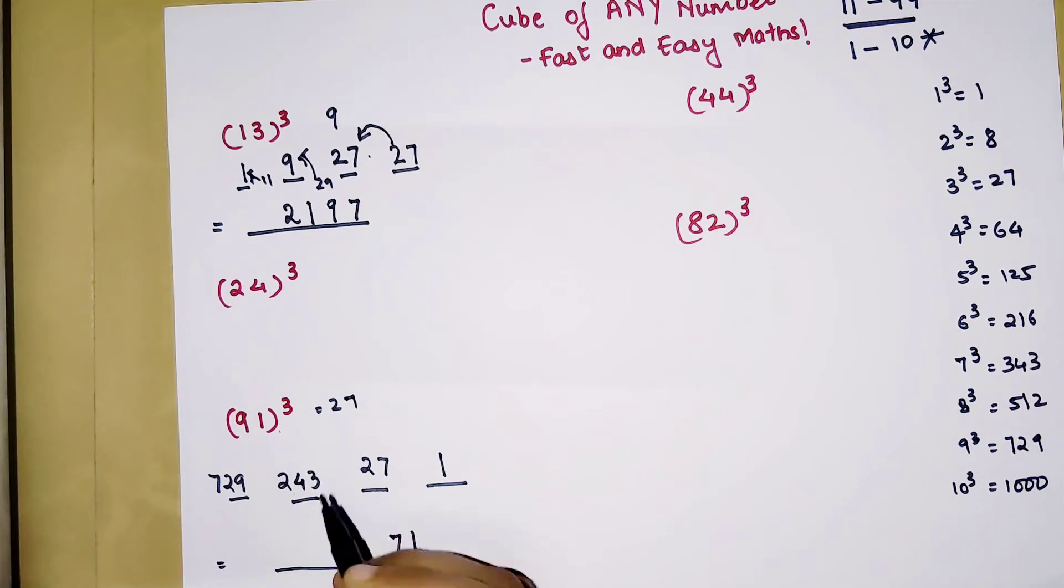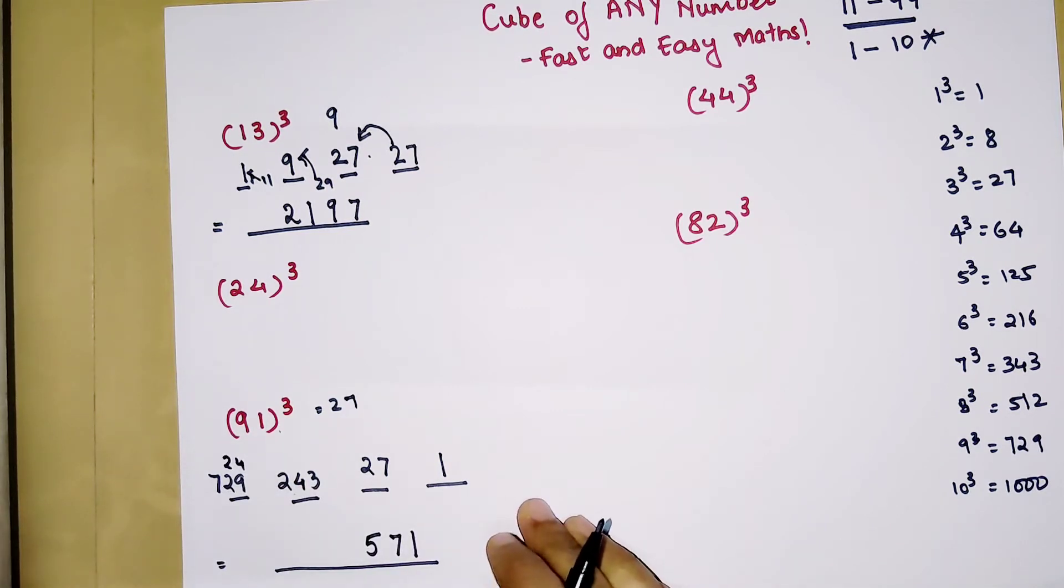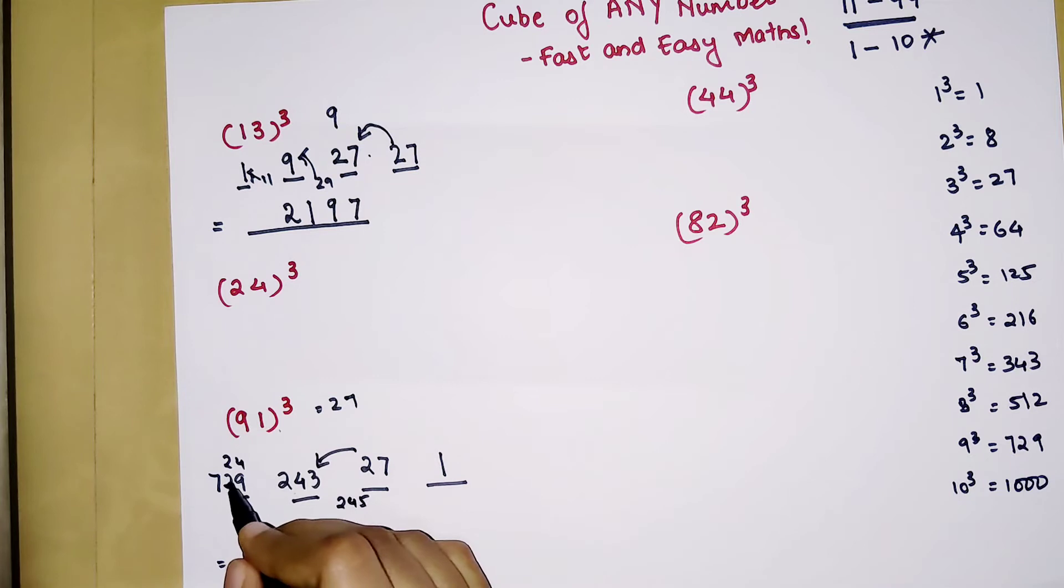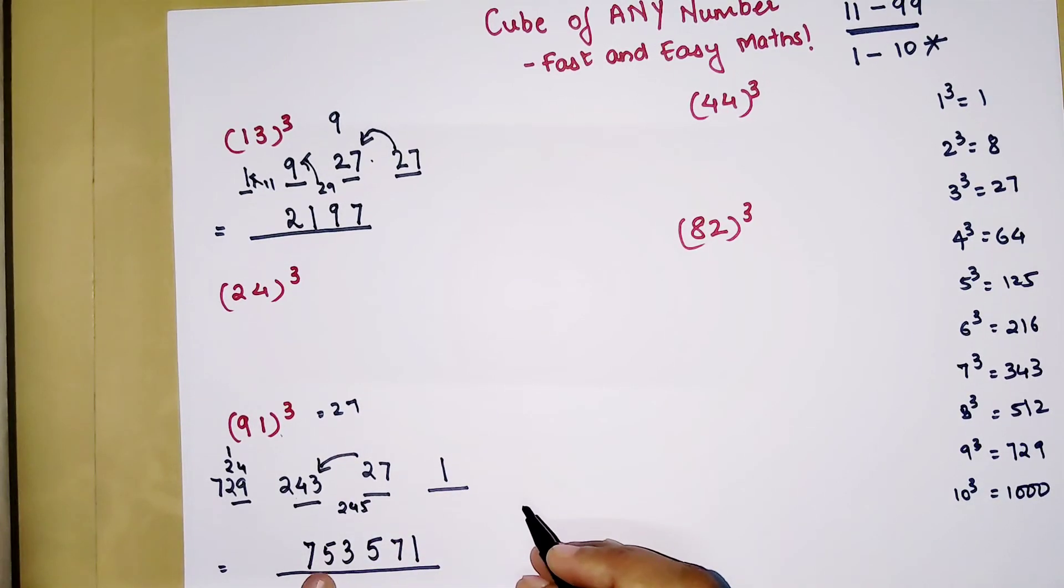Now time for your final answer. So here 1 will be taken as it is. Then 7 will be taken as it is. 243 when gets added by 2, you get 245. So 5 will be taken. And then this 24 will get added to 729. So 4 plus 9 is going to get you 13, 1 carry. 1 plus 2 plus 2 is going to get you 5. And 7 will come down as it is. So your answer for 91 cube is 753,571.